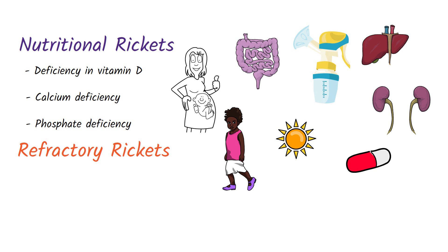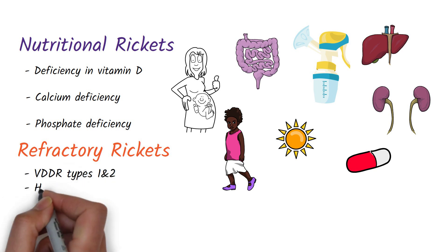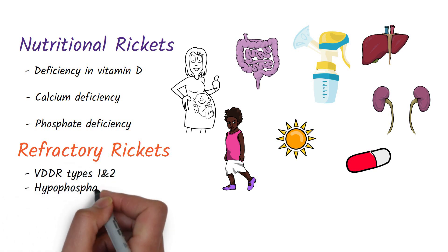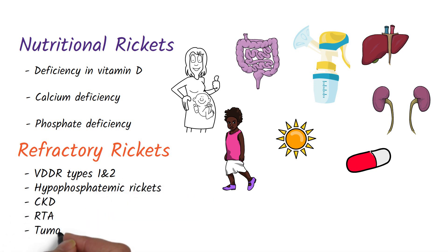For refractory rickets, it can be due to vitamin D dependent rickets which is type 1 and type 2, hyperphosphatemic rickets, chronic kidney disease, renal tubular acidosis, and certain tumors, but the most common cause of rickets generally is nutritional deficiency of vitamin D.